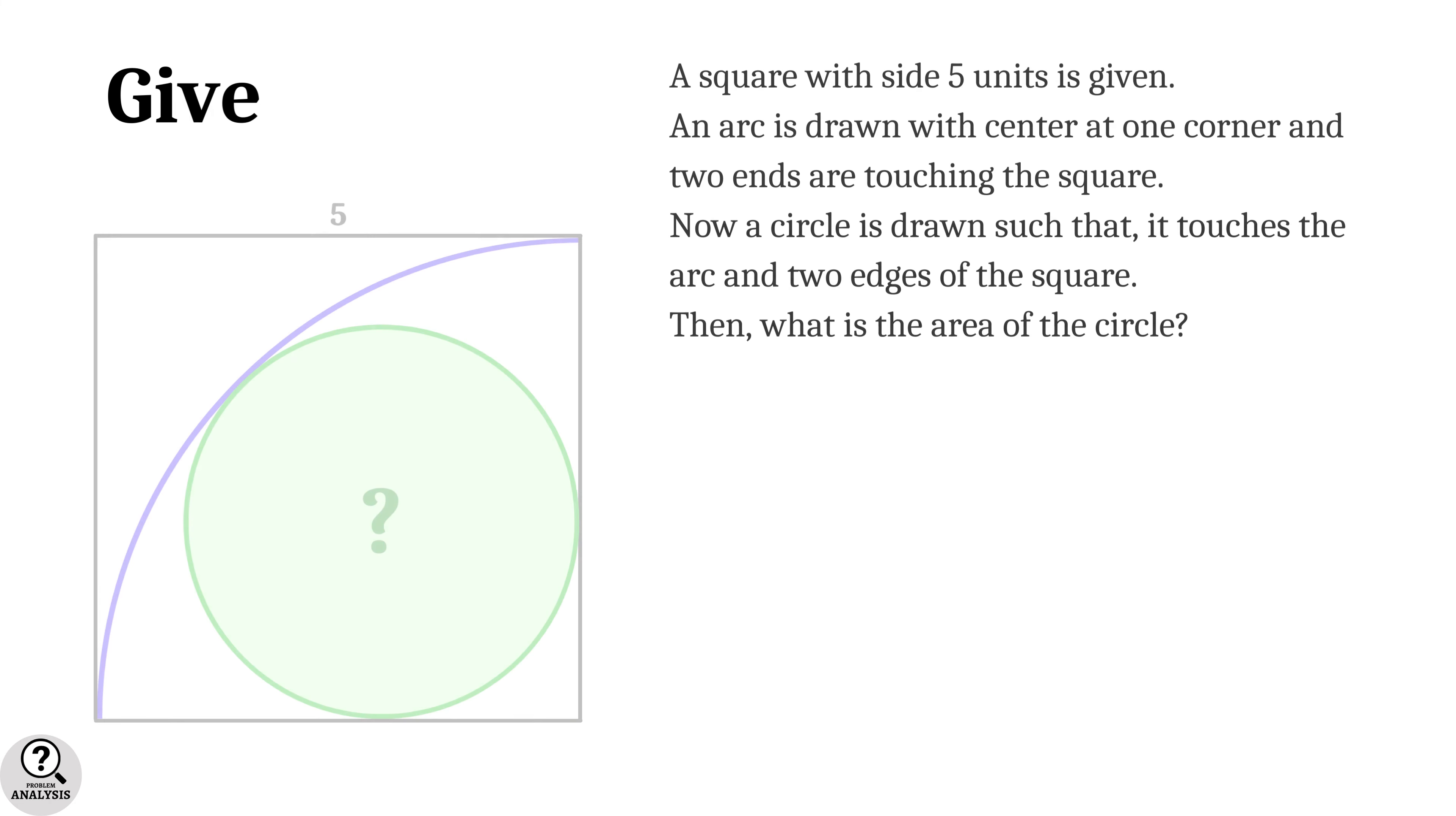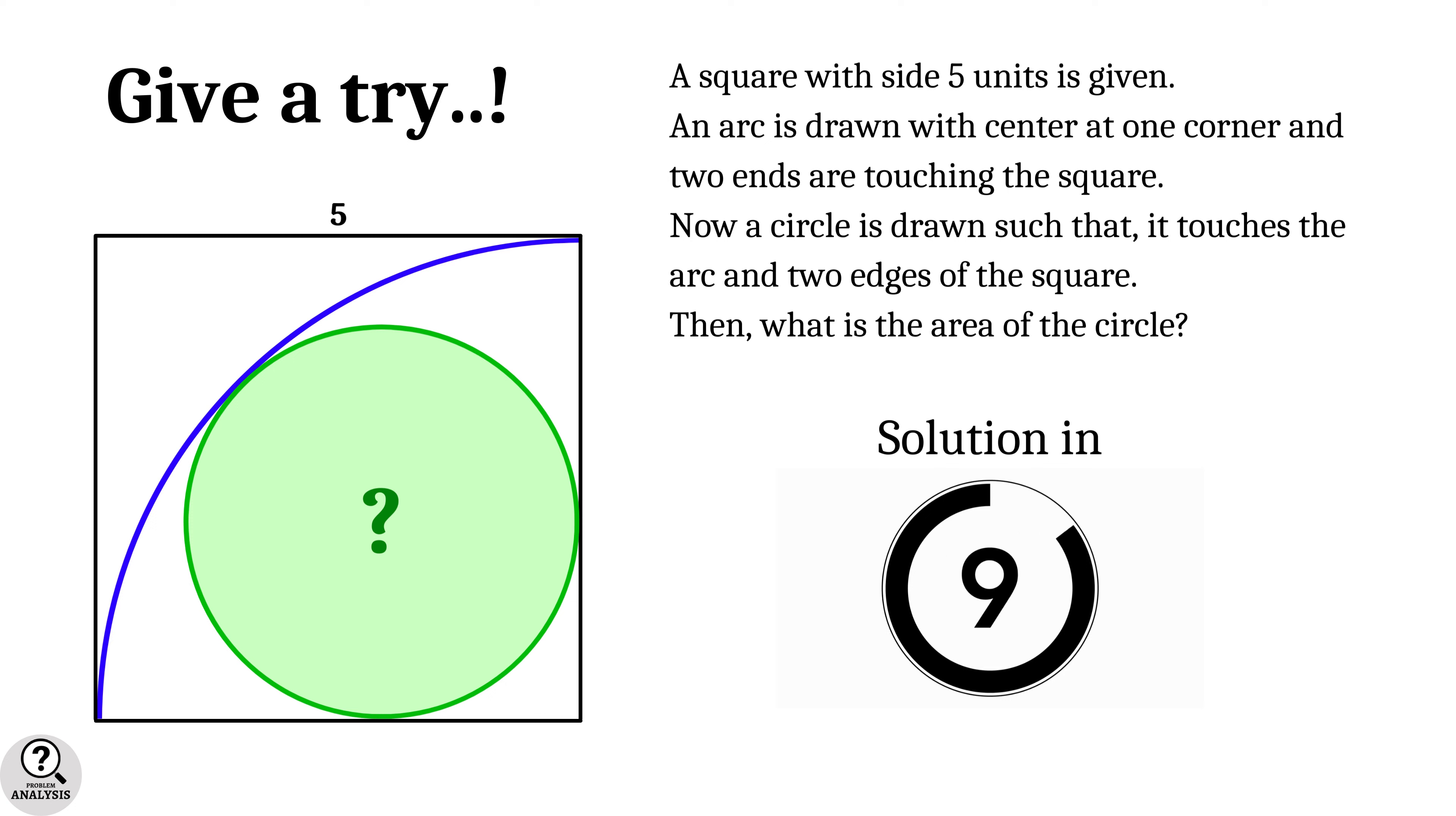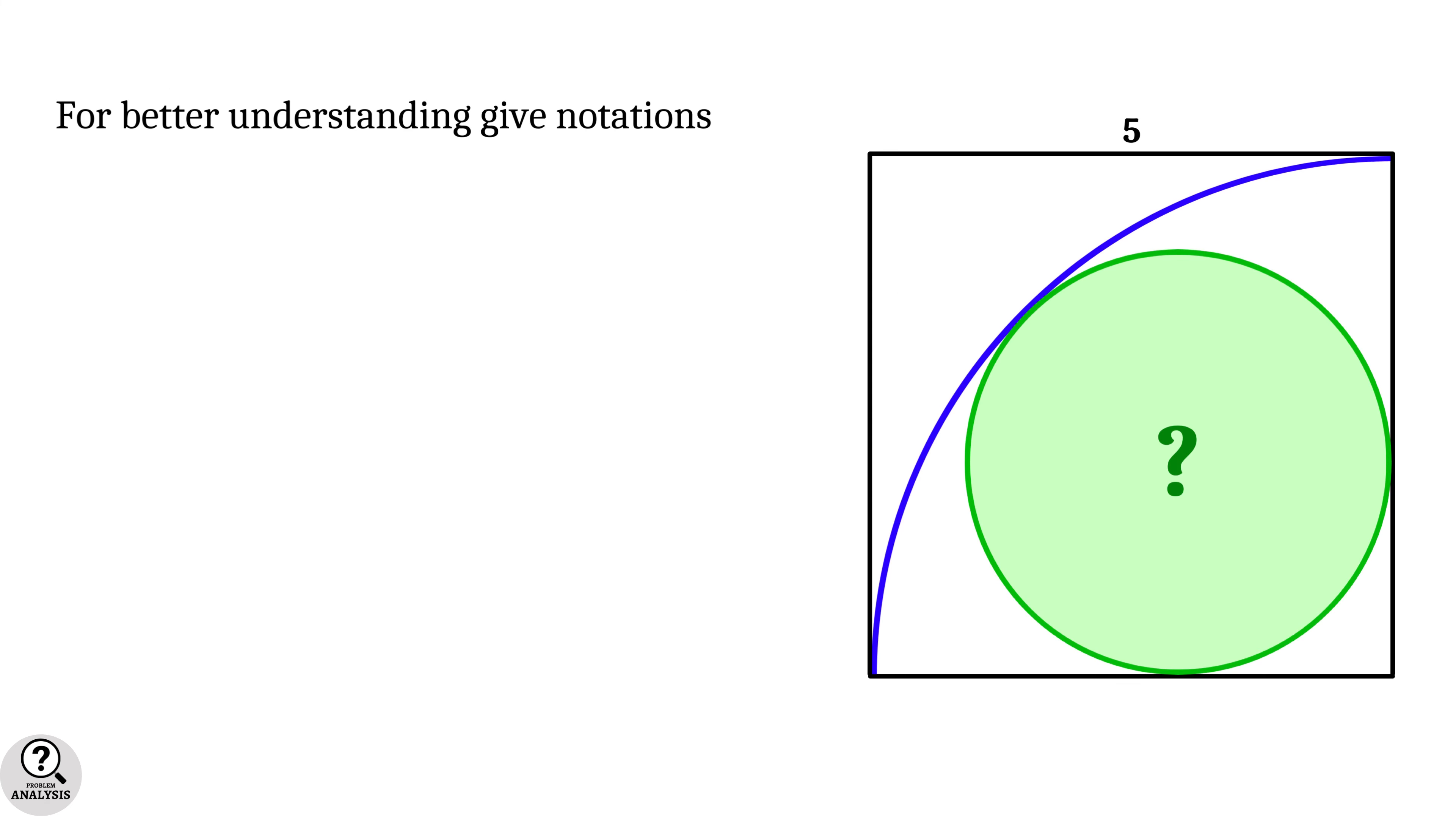If you want to attempt the problem, pause the video and just give a try. And the solution is right here. For better understanding, let's give some notations to each vertex. The square is named as ABCD and the three touching points are named as P, Q, and R.